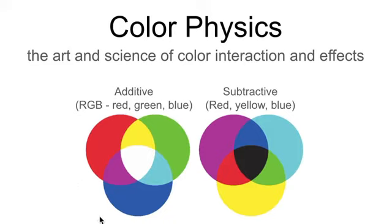Additive color is essentially the combination of different colors of light. So if you shine a red light, a green light, and a blue light in equal amounts,